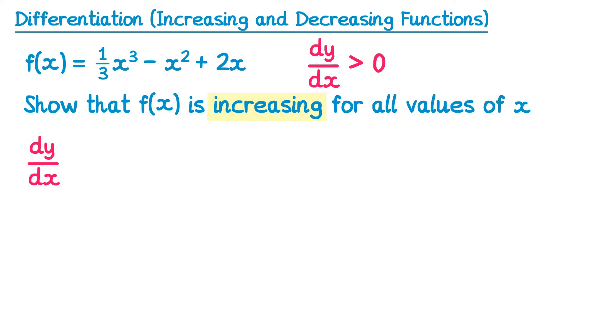So dy/dx, we do three times a third which is just one, and then reduce the power of x cubed down to x squared. If we differentiate negative x squared we get negative 2x, and if we differentiate plus 2x we get plus 2.